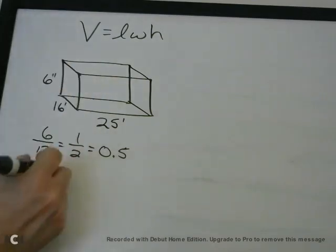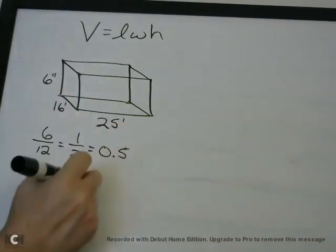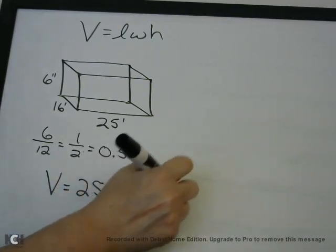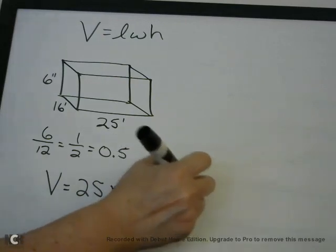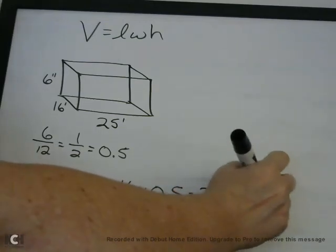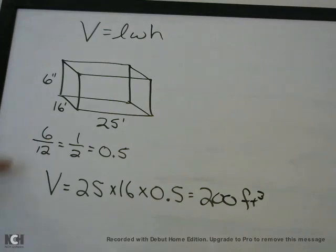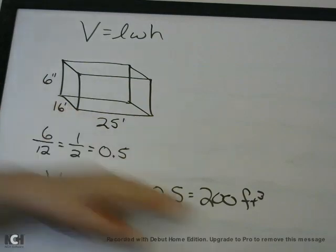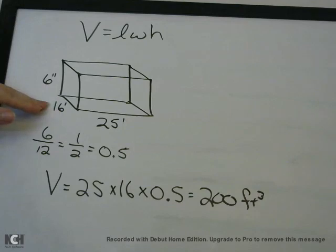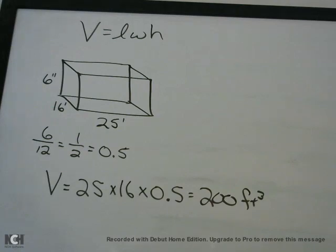So now we can get our formula sheet out: 25 times 16 times 0.5, and if you do that you're going to get 200 feet cubed. Just be careful — if they start mixing units, you need to make sure they are all the same units. Because remember, in the answer it's feet cubed, so if one dimension is in inches that doesn't make sense. Similarly, if you'd rather make all these inches, you just multiply those by 12 — you'll end up with larger numbers but the same concept.